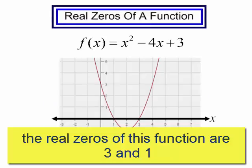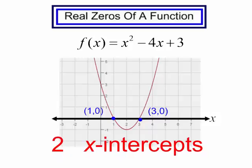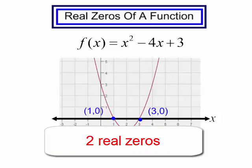When I graphed this function, I do notice that it has an x-intercept at 1, and it has an x-intercept at 3. These are the points 1, 0, and 3, 0. So I have two x-intercepts, which means I have two real zeros.